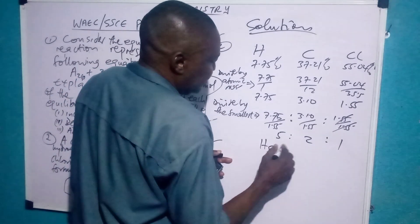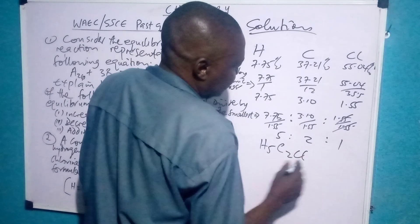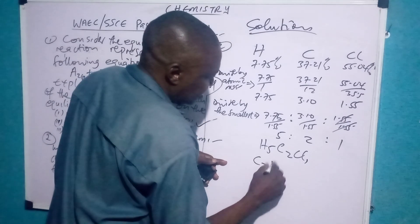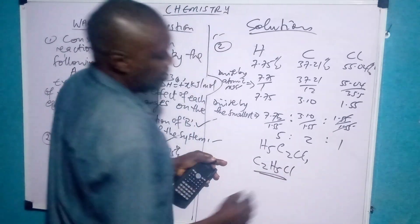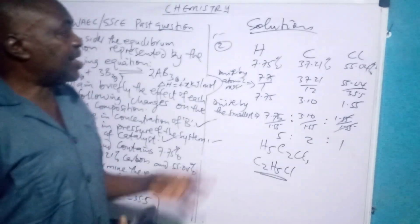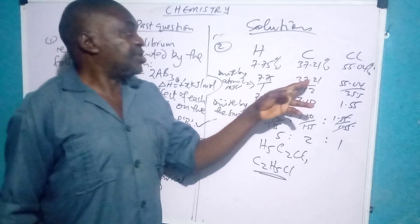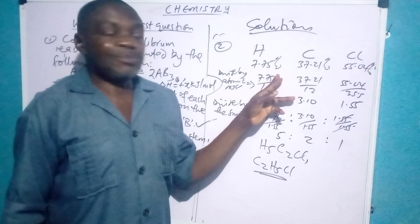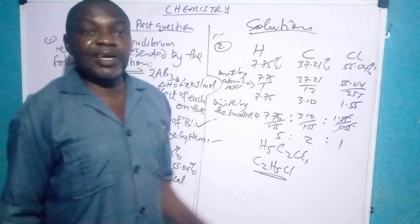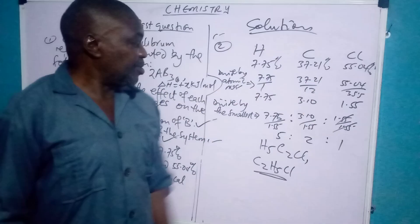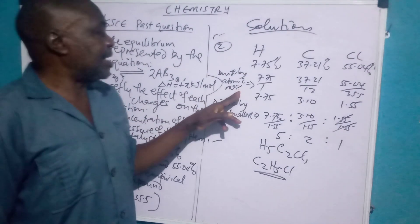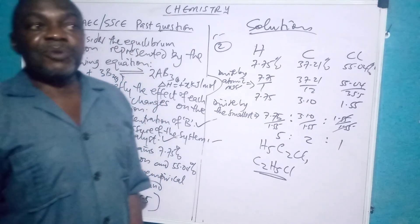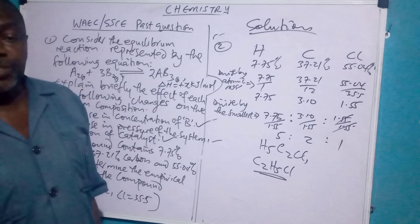Writing it properly as an organic compound: C2H5Cl. This is the actual empirical formula. Remember, in some calculations they won't give you all the values — you add the given percentages and subtract from 100, since everything is a percentage, and the remainder will be for the missing element. In this calculation they gave us everything, so we follow the three steps: first, divide each by atomic mass; second, divide by the smallest to get the mole ratio; third, write out the empirical formula. Thank you very much for watching — please kindly subscribe. God bless you.